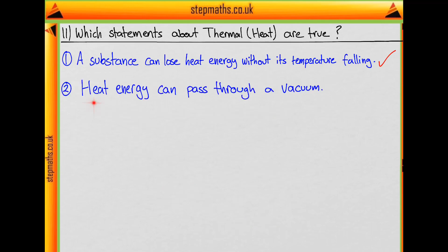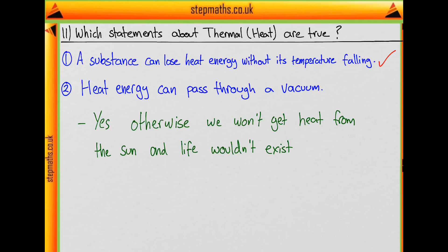Statement 2: heat energy can pass through a vacuum. Well yes, this has to be true — otherwise we wouldn't get any heat from the sun and life wouldn't exist. So statement 2 is true.